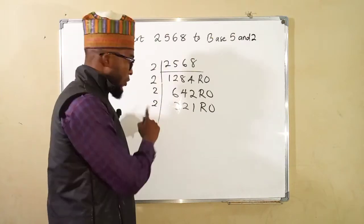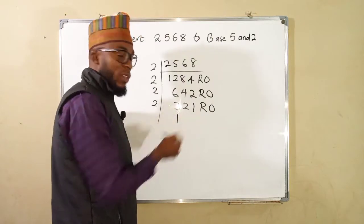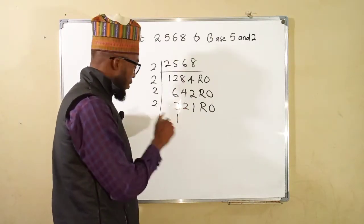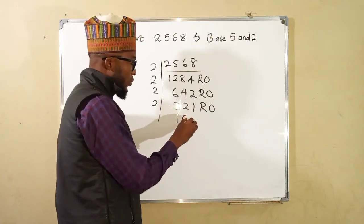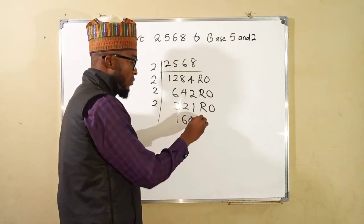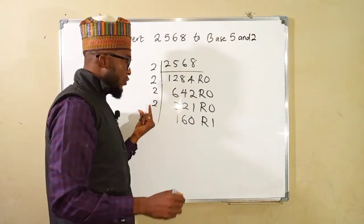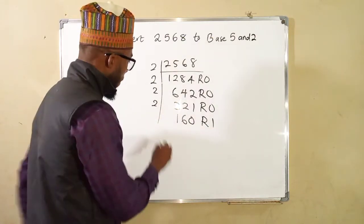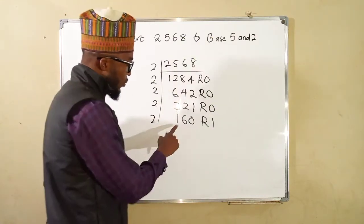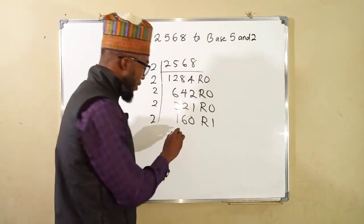2 here, 2 can go into 3 one time but we have 1 left, take that one to the next number it becomes 12. 2 into 12 six, 2 cannot go into 1 so we write 0 but we have 1 left because if you times 160 by 2 you shall get 320 so we have 1 left again. 2 cannot go into 1, you join them together, 2 can go into 16 eight times.